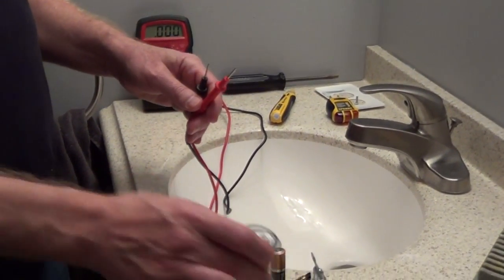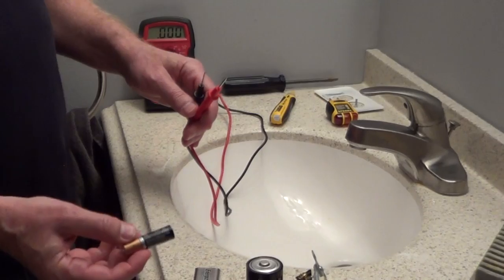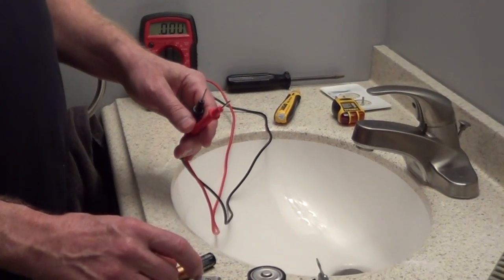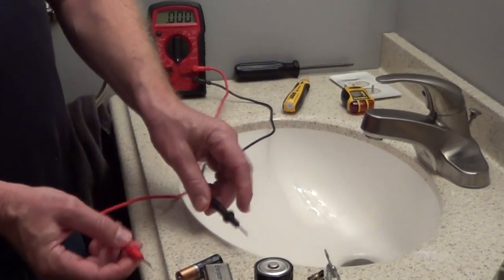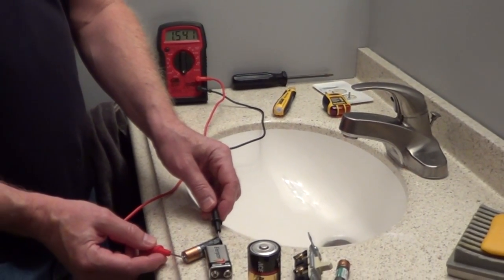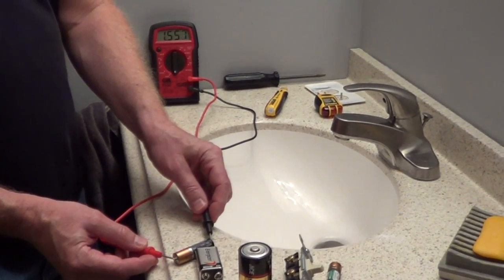We have a D battery and a double A or a triple A. All of these are 1.5 volts, it's just bigger storage or smaller storage. And by touching it on the ends you can see 1.5 volts.